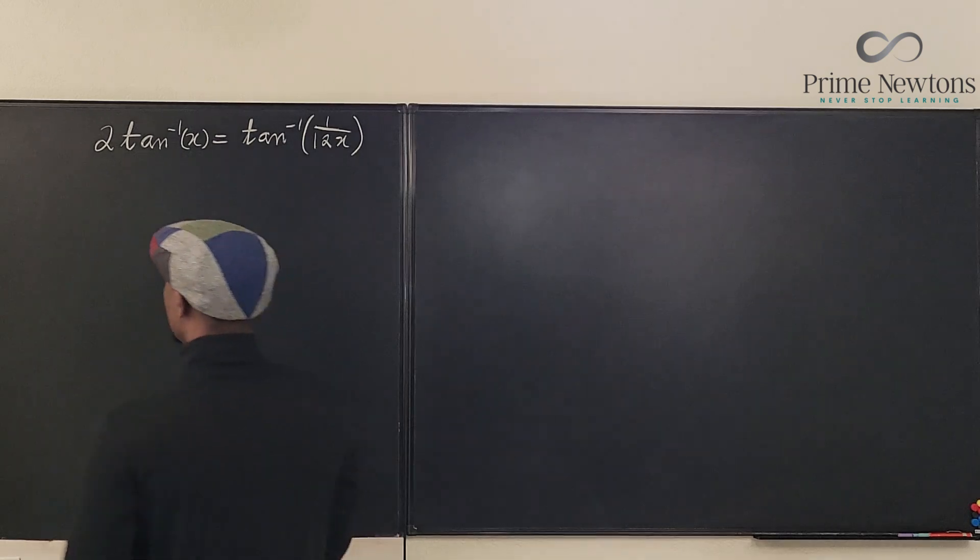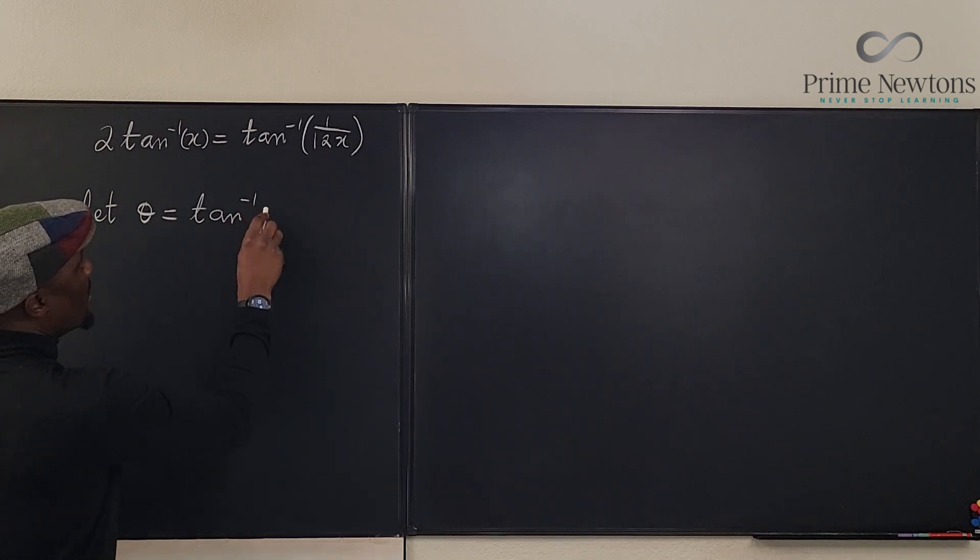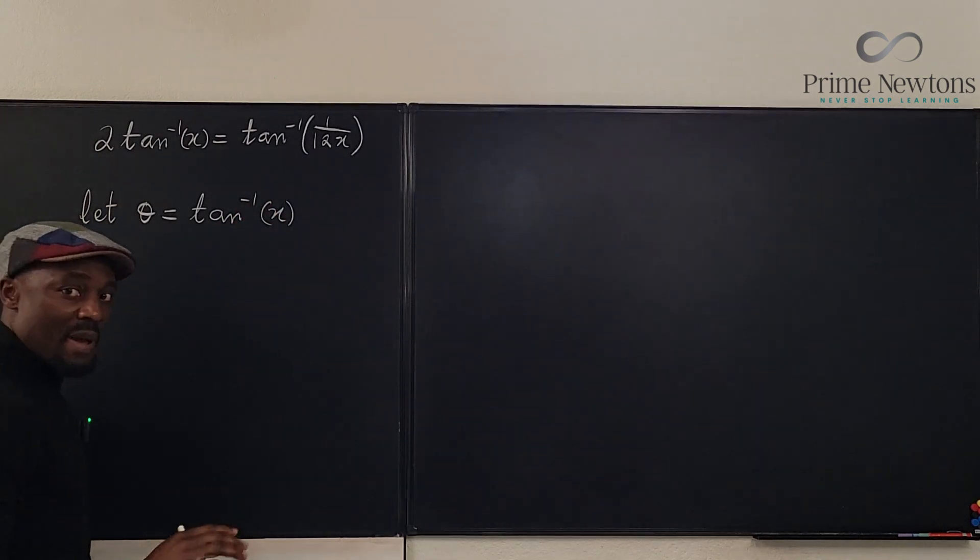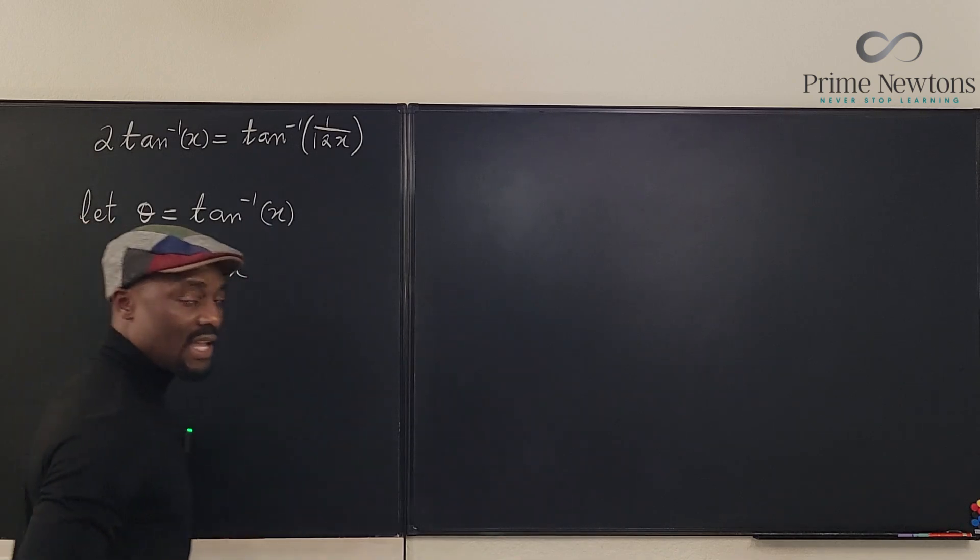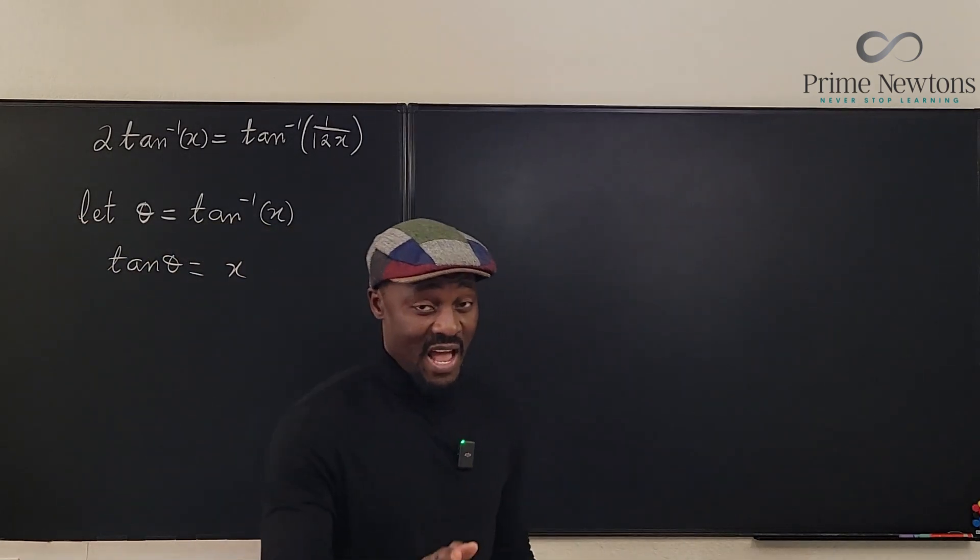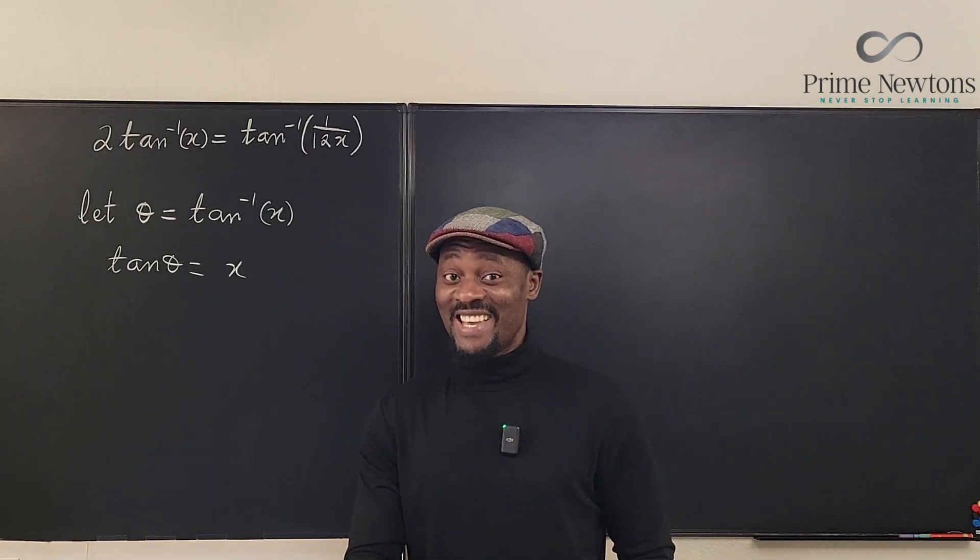So what I'm going to do is say let theta be equal to arc tan of x. Remember if theta is arc tan of x, it means that the tan of theta is x. That's the meaning. If you take the tan of both sides you're going to end up with tan theta is equal to... if you take the tan of this it's going to release this x. So tan theta is equal to x and that's going to make our life a lot easier.